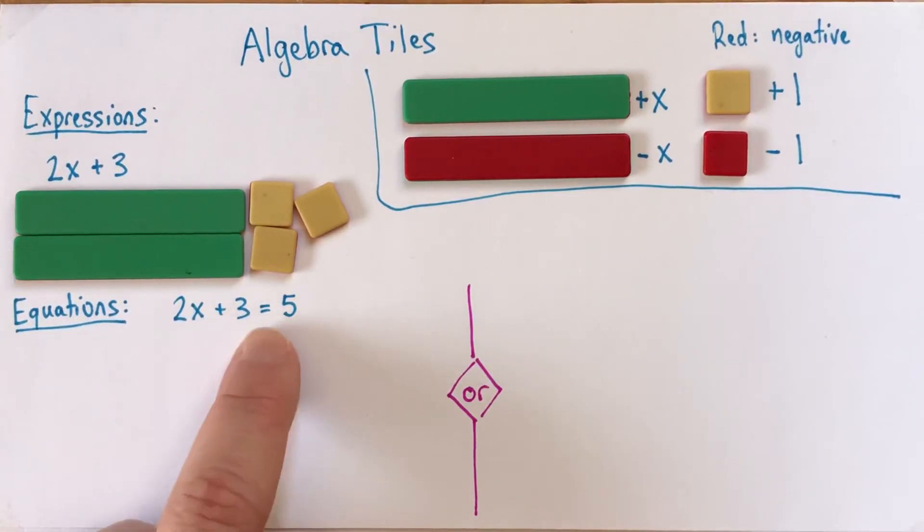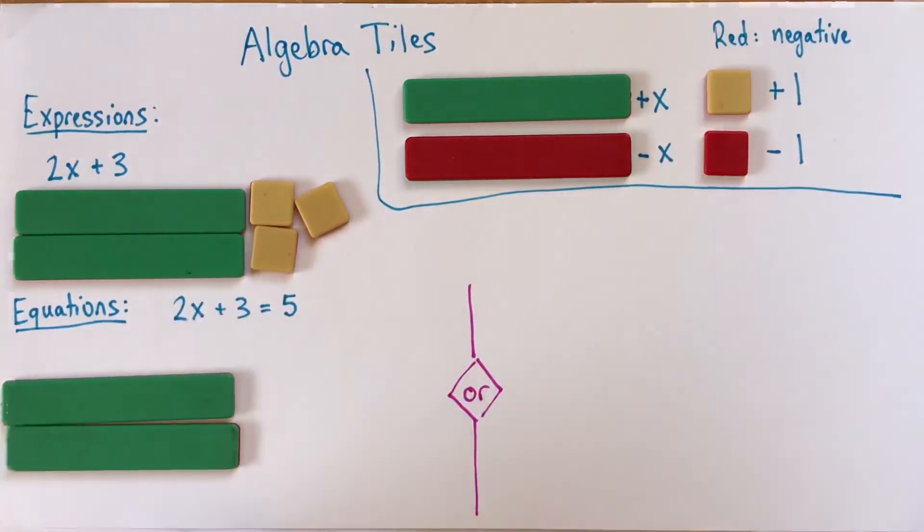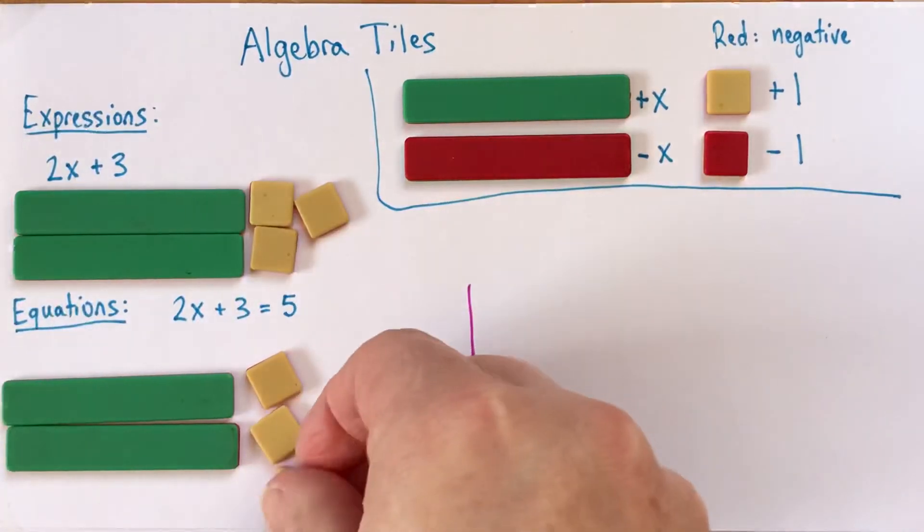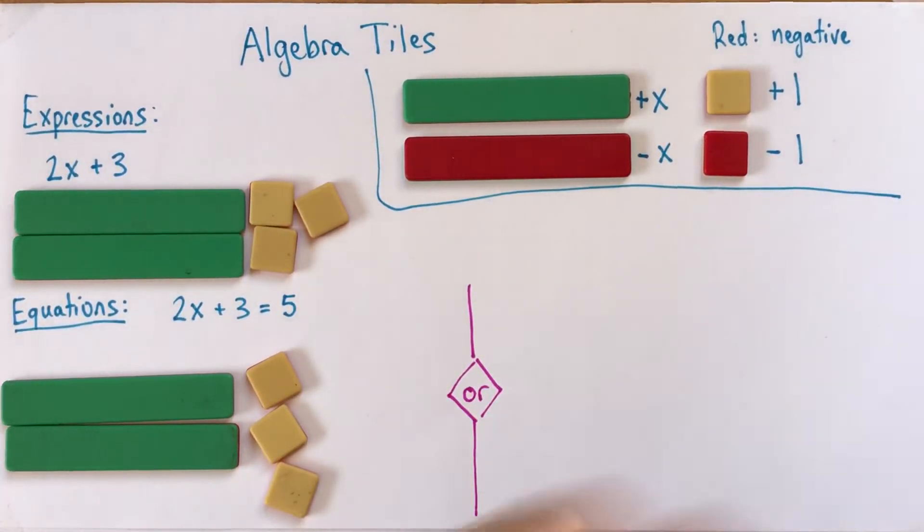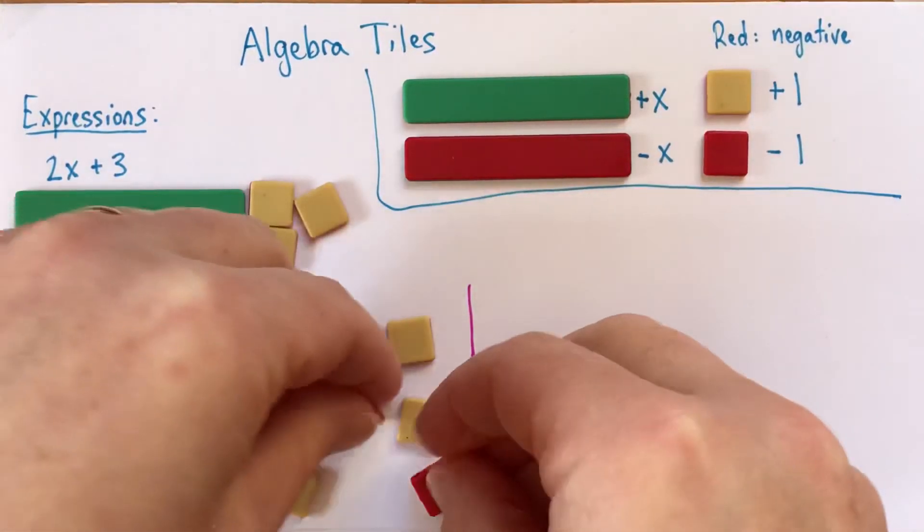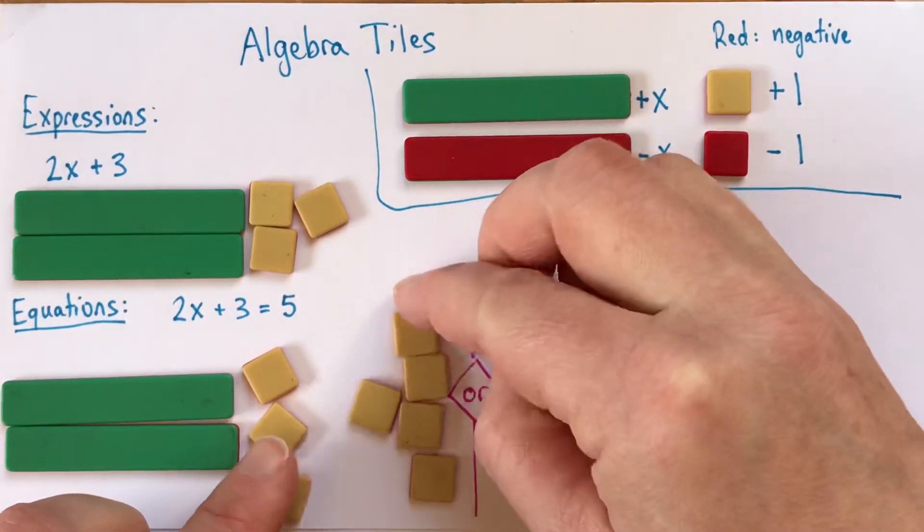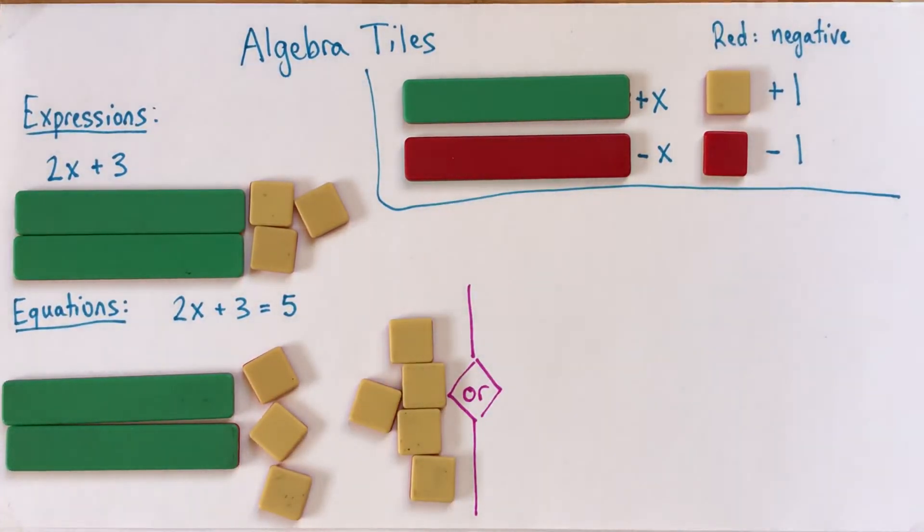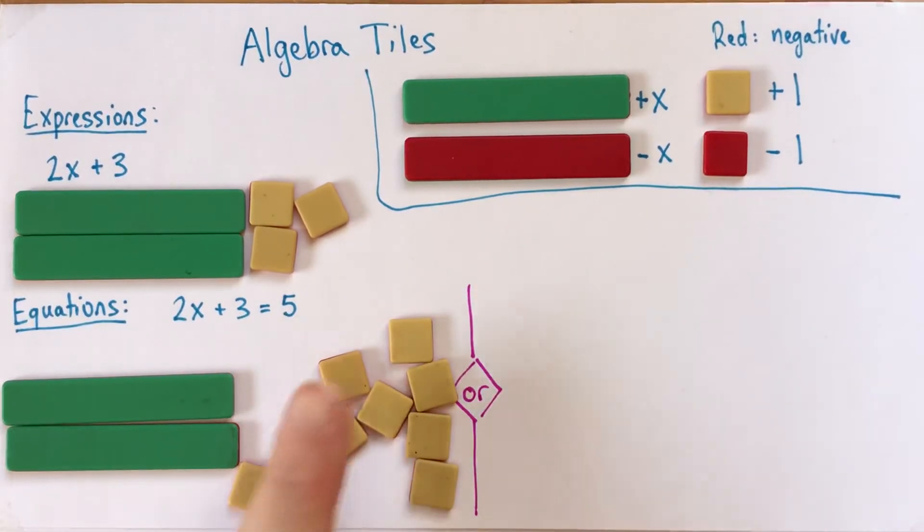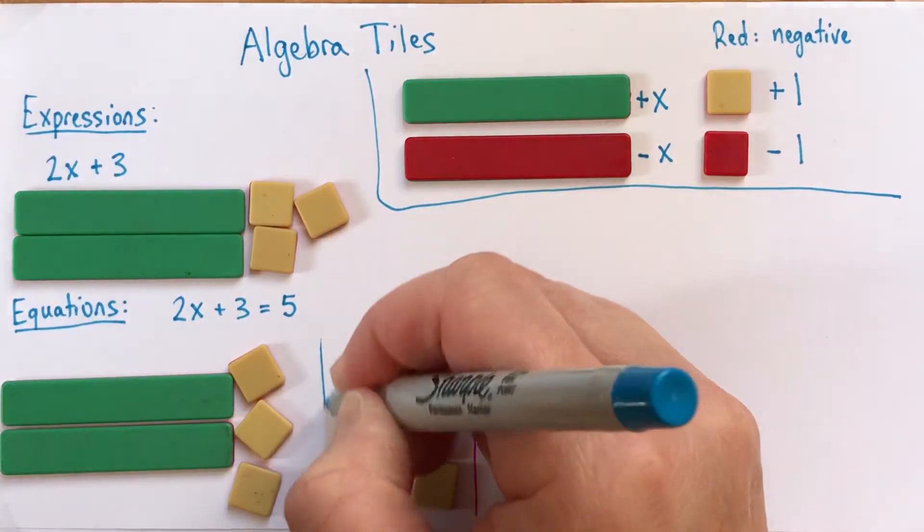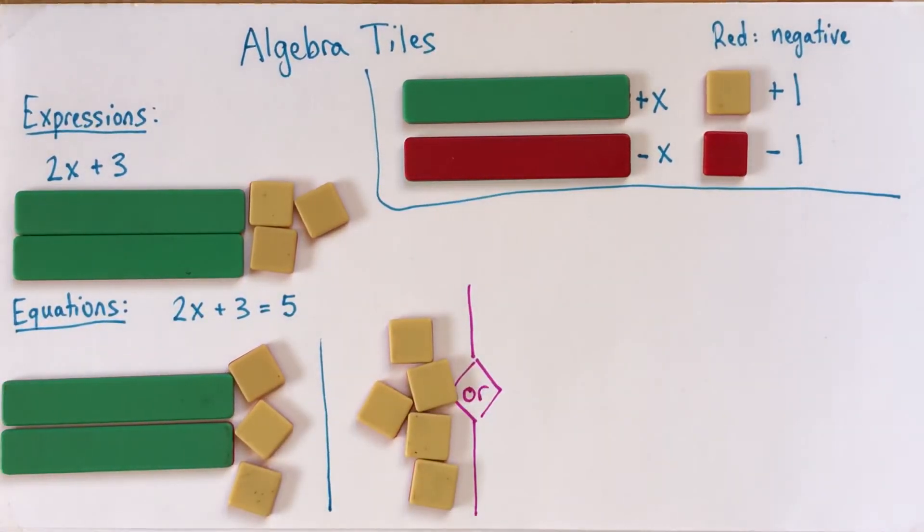So sometimes people might start off and show 2X plus 3 and the 5, which is a perfectly good way to start. But I think we need to write something else in there so that we really know, for example, that we don't let that slide over there and get mixed up. So a really simple way to do it is just draw a line down your page. And this line represents the equal sign or it tells us that the two sides have the same value as each other.